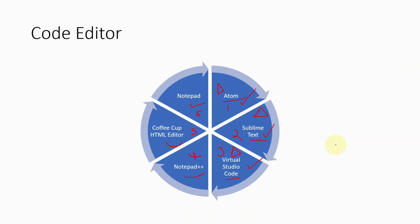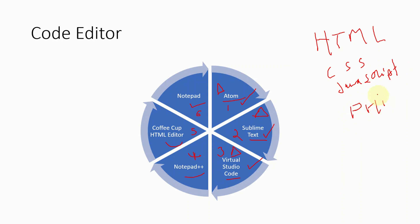It depends which language you are using. We have HTML, we have CSS, we have JavaScript, we have PHP, we have Python, we have C#, we have the C language, we also have another language called R, we also have Java, and we have C++. So these are just the computer languages, provided so you know them in case you're going to learn computer science at university or college.